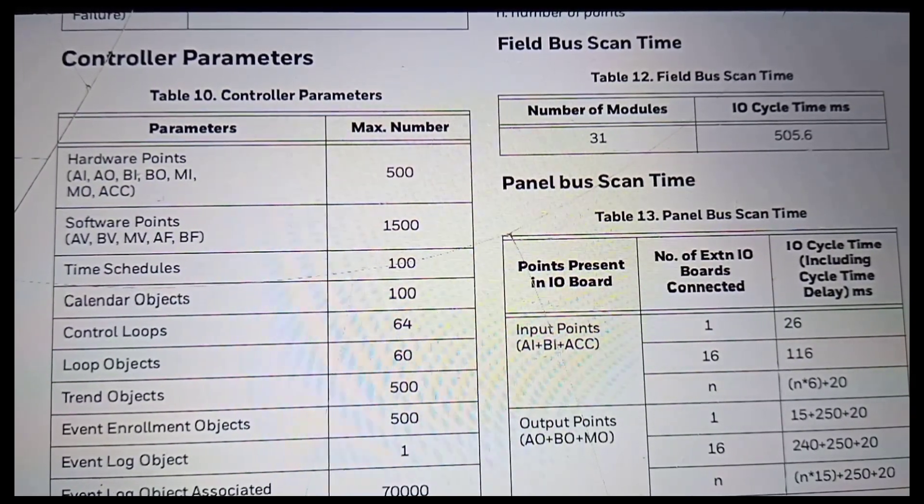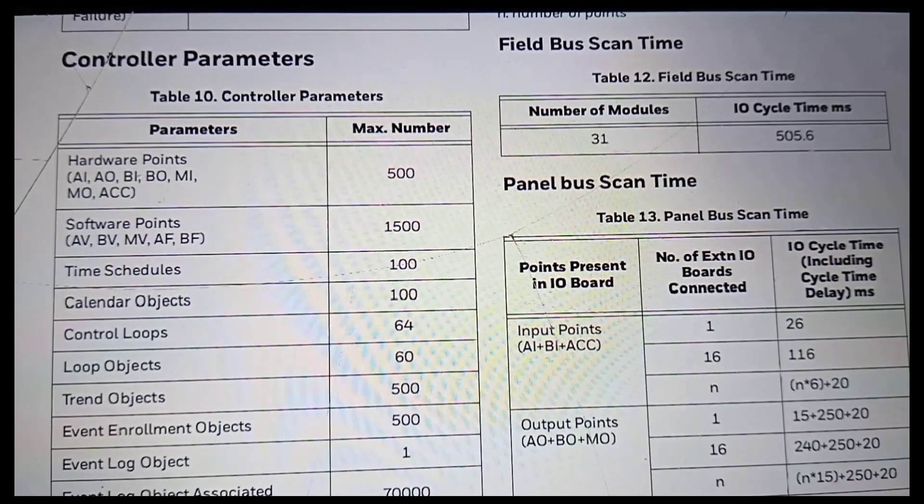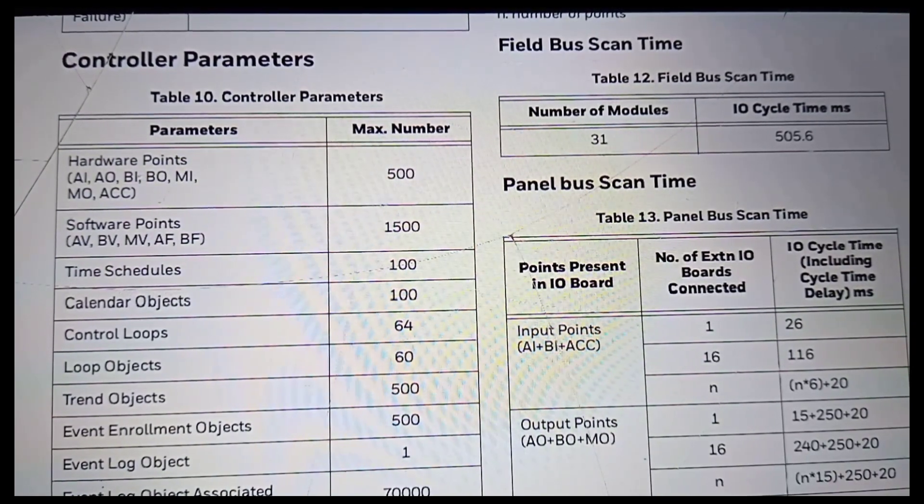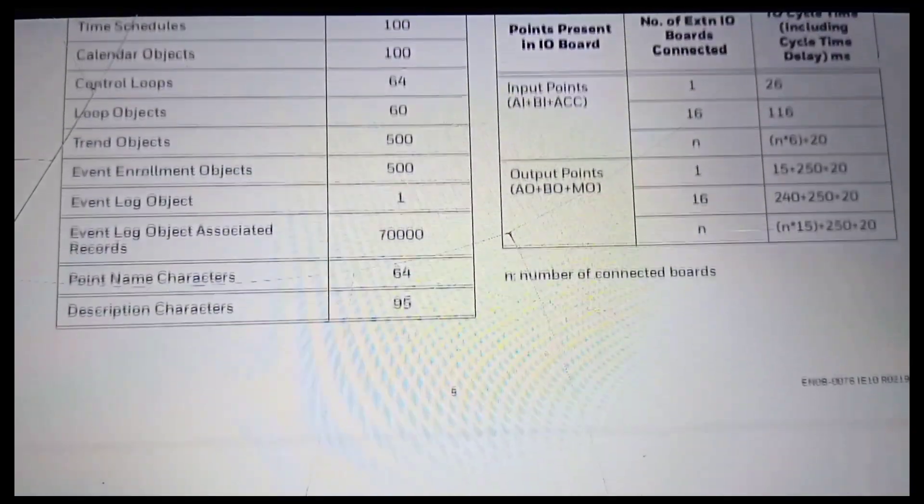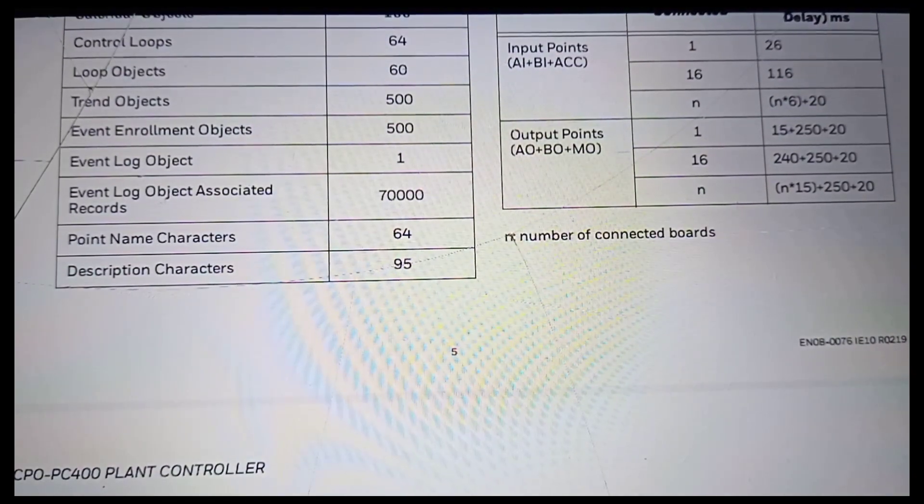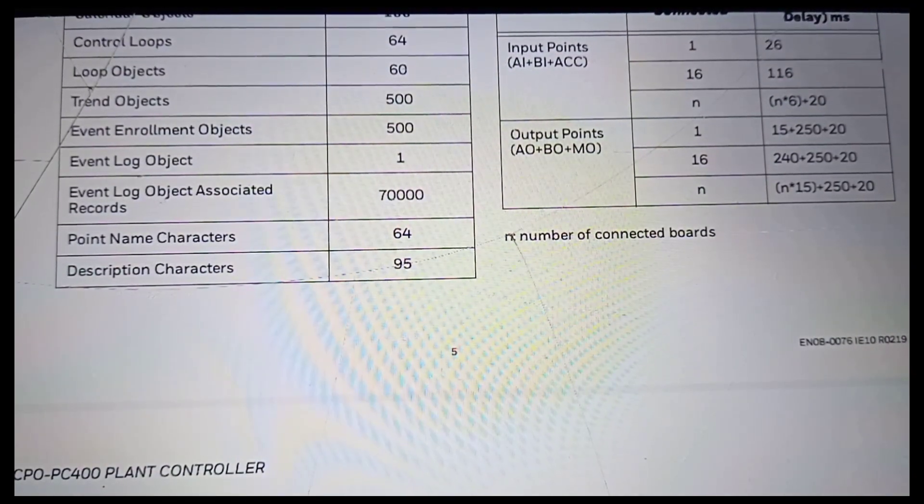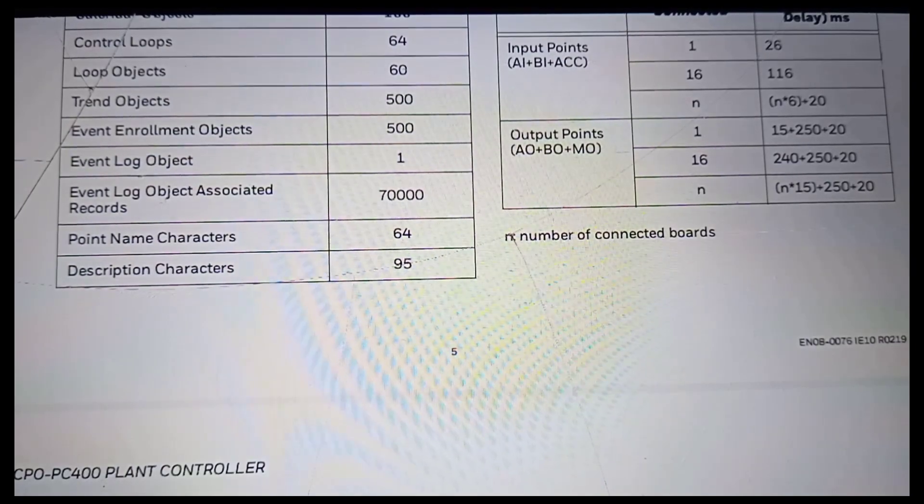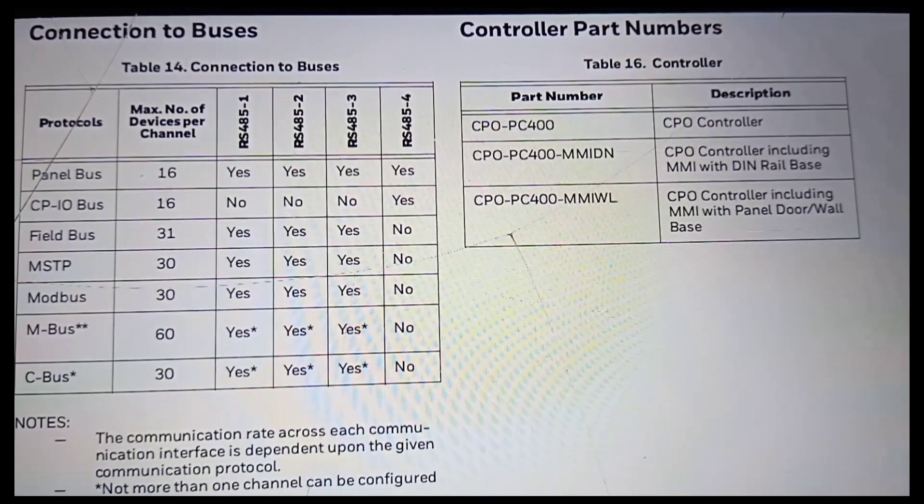Two Ethernet connectors switch ports. RJ11 interface to connect with an HMI device for field operations. All RS-485 channels support Panel Bus, BACnet MS/TP, Field Bus, Modbus, M-Bus, CP-IO, and C-Bus data sharing.